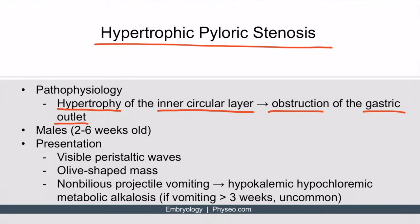This usually occurs in males between two to six weeks old. Regarding presentation, the newborn may show visible peristaltic waves — you can actually see these just by looking at the skin of the newborn's belly. You can also feel an olive-shaped mass. These patients often have non-bilious projectile vomiting, which is non-bilious because the obstruction is proximal to, or above, the bile duct, so no bile would be in the vomit.